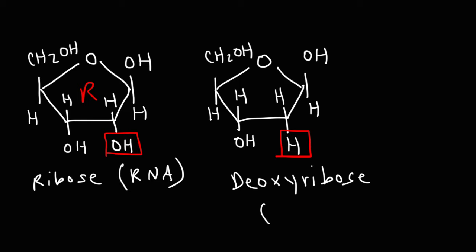Deoxyribose is found in a different nucleic acid called DNA, which stands for deoxyribonucleic acid. The simplest sugar is known as glyceraldehyde, a three-carbon sugar. So that's it for the monosaccharides - monosaccharides are basically one sugar unit.